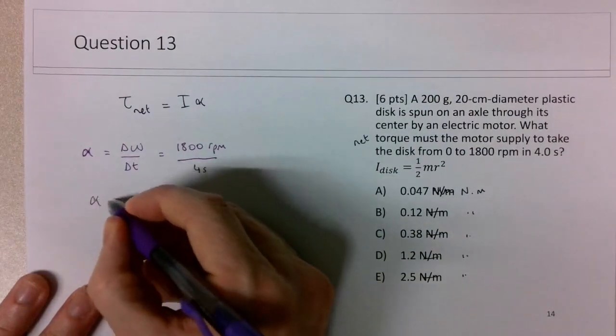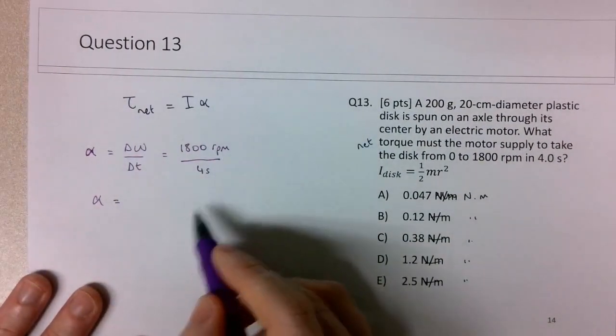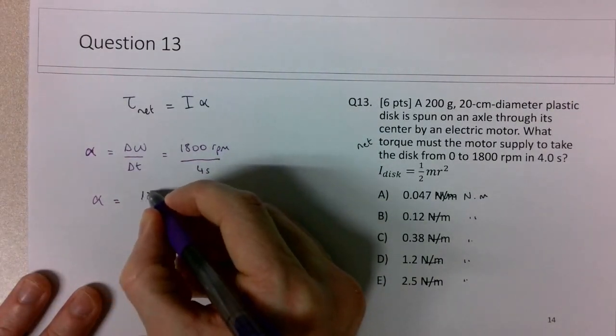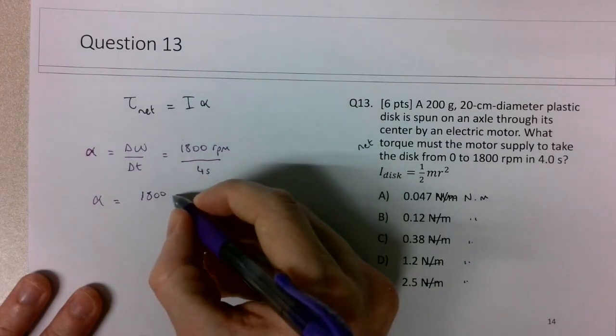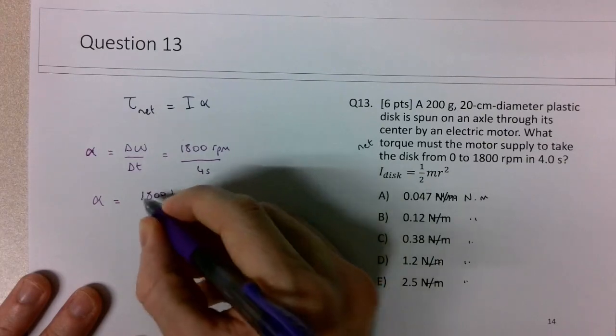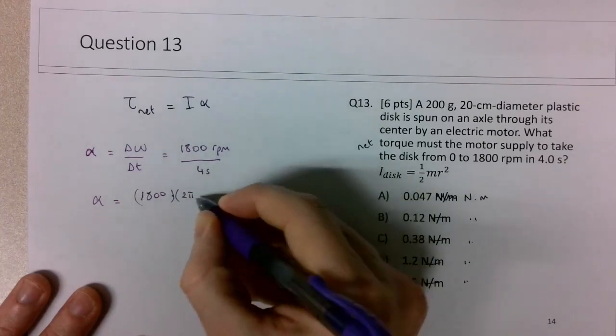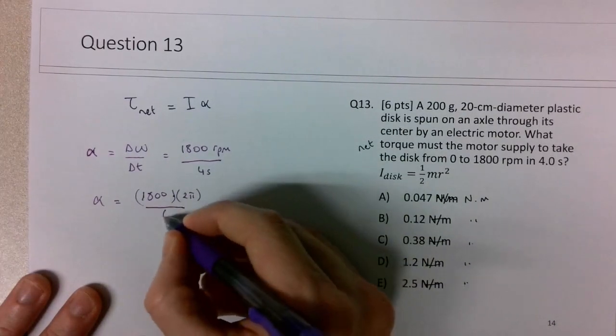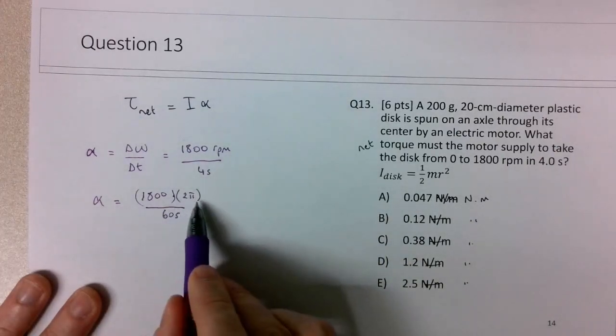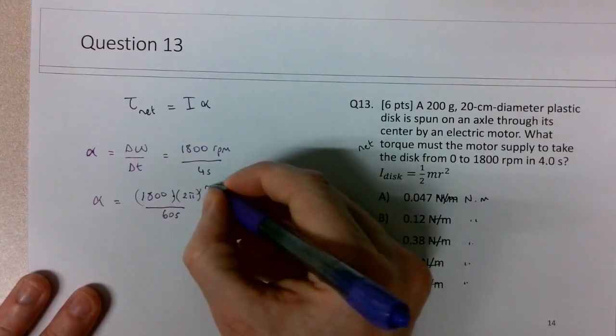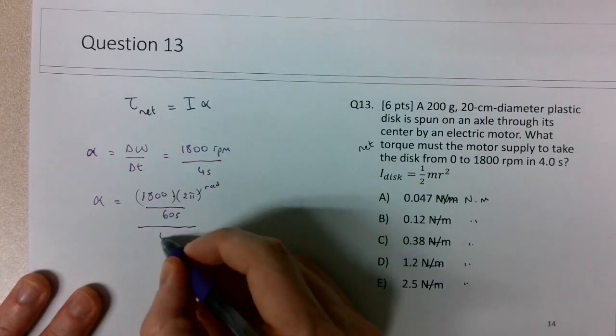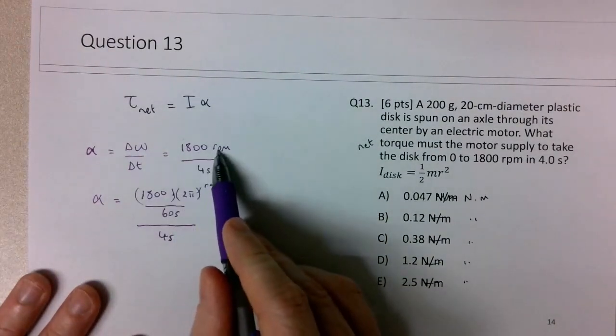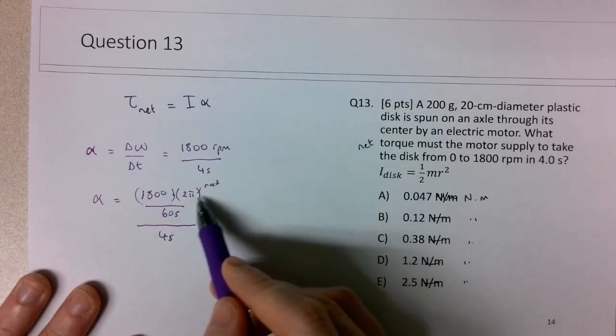So what we want to do here is first convert this 1,800 revolutions per minute to radians per second. So I want to have in my numerator 1,800. We want to multiply this by 2 pi to get the 1800 revolutions into radians. And then I want to divide by 60 to get it into radians per second. And now we'll just divide it by 4 seconds. So this piece here, the numerator, is converting the 1800 rpms to its correct units in radians per second.